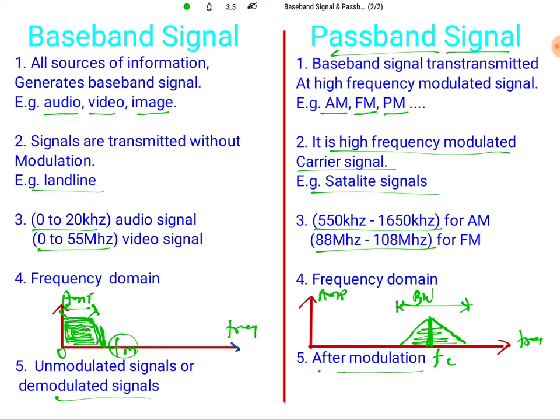In passband signal there is no fixed frequency range. What we do is modulate the baseband signal over a carrier signal and send it over the channel. So passband signal is associated with a modulated signal and baseband signal is associated with an unmodulated or demodulated signal. Thank you for watching. Please give your feedback and suggestions regarding the videos and topics required for communication engineering.